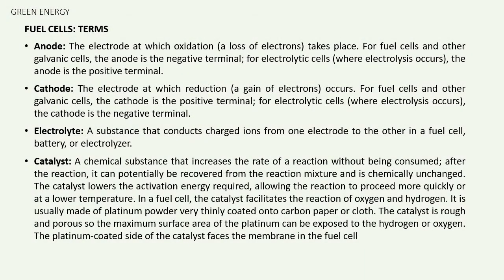Before going further into the working principle and the types of fuel cells, we need to understand a few terms which we already have studied in our lower classes. We will just brush up those terms. The first one is anode. Anode is an electrode at which oxidation takes place. Oxidation means loss of electrons. For fuel cells and other galvanic cells, anode is a negative terminal. But for electrolytic cells where electrolysis occurs, the anode is a positive terminal. Don't confuse — since we are studying about fuel cells, anode means negative terminal.